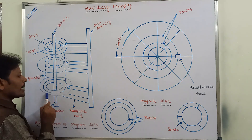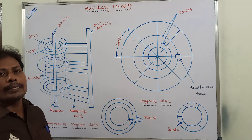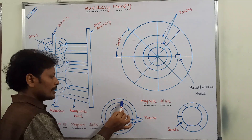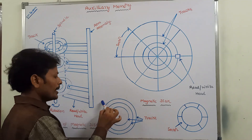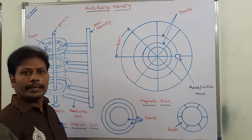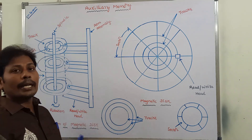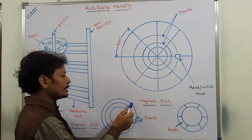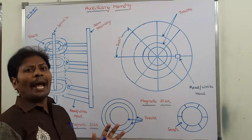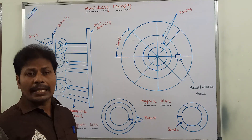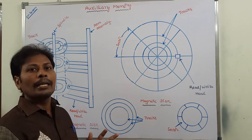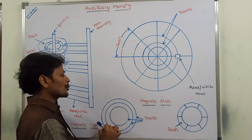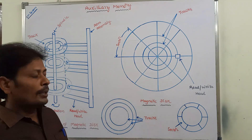These concentric circles can be called as tracks. Each and every concentric circle can be called as a track. On those tracks, some magnetized material is there, and on that magnetized material some spots are there. In those spots, we store the binary information.